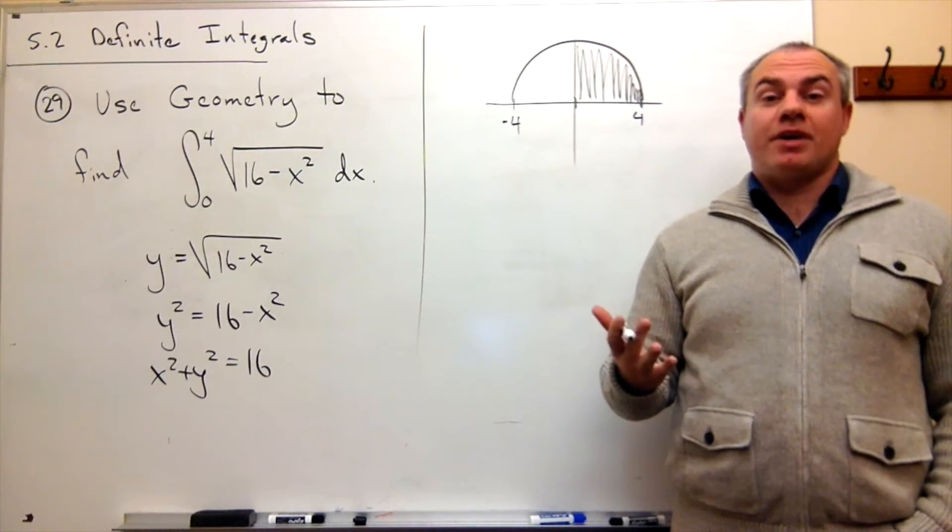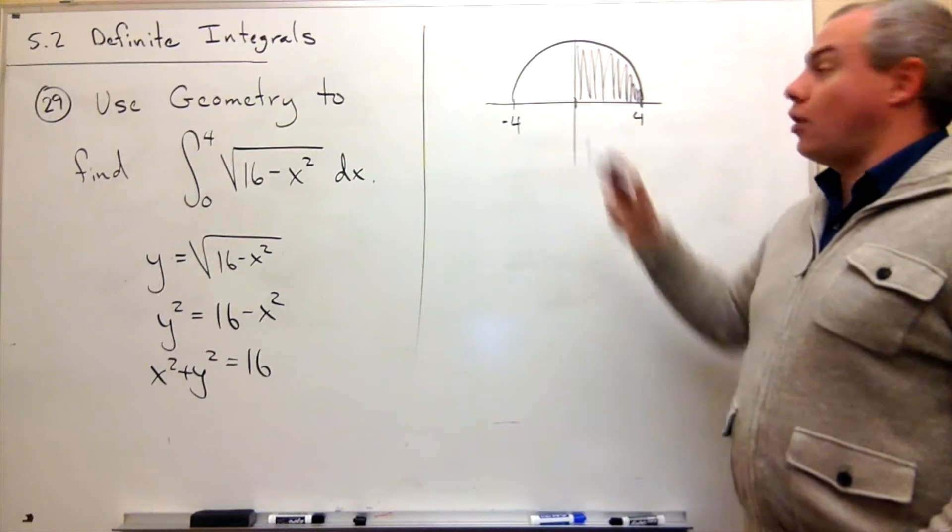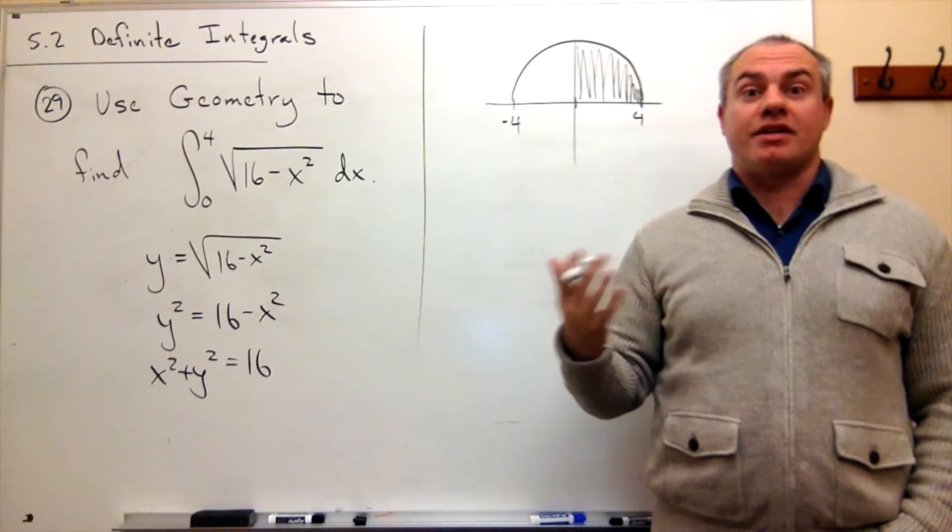In other words, I just need to be able to figure out how much area is there in one quarter of a circle that has radius 4.